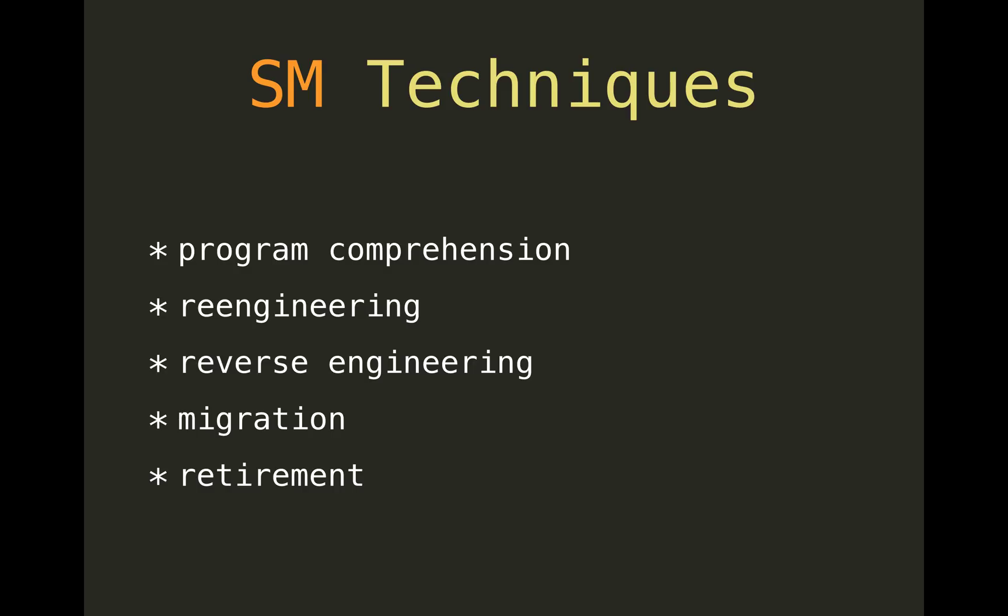Techniques for software maintenance include program comprehension — understanding and reading code, possibly using tools to navigate it. Reengineering is when you take an existing solution and reengineer it into something different, which happens quite a lot with migration, but also includes refactoring or changing the design to improve or enable other things. Reverse engineering goes the opposite direction of classic forward engineering: you start with a system and try to understand what was in there — the intent, design, and architecture — often to reengineer it into something more maintainable.